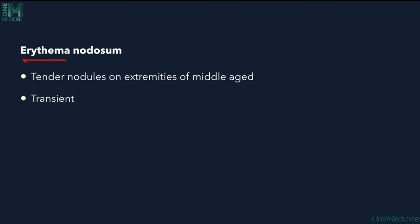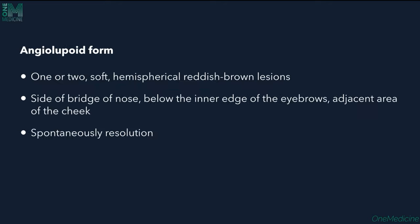Erythema nodosum presents as tender nodules on the extremities in middle-aged patients. The differential diagnosis in India would be TB and leprosy, so these must be ruled out before considering sarcoidosis.